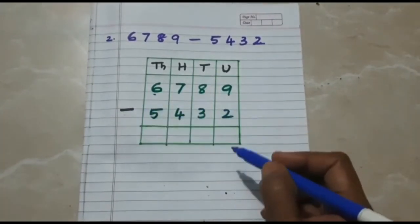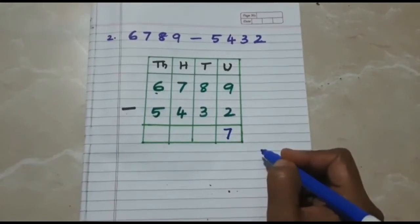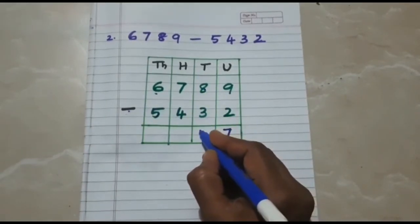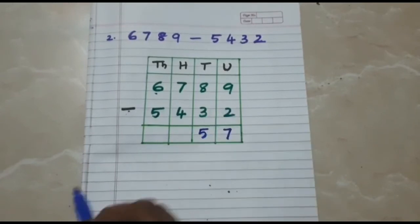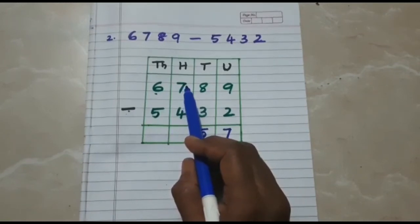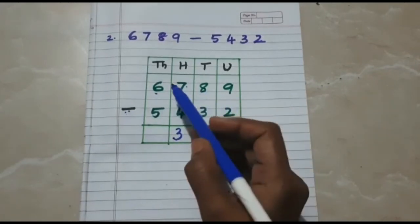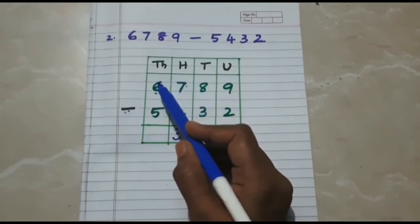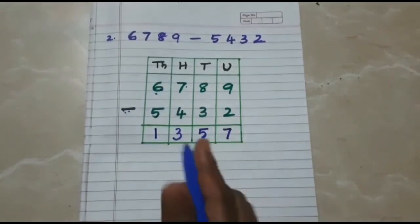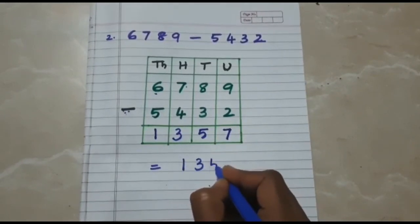9 minus 2 is 7. Then 8 minus 3 is 5. As we finish with the tens, we move on to hundreds: 7 minus 4 is 3. Finally, as we finish with the hundreds, we move on to thousands: 6 minus 5 is 1. So our difference is 1,357.